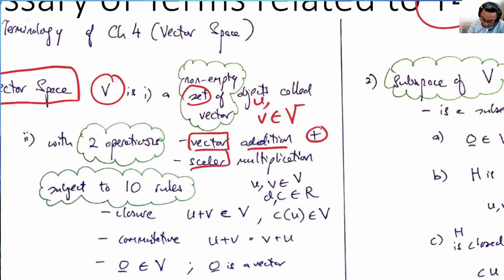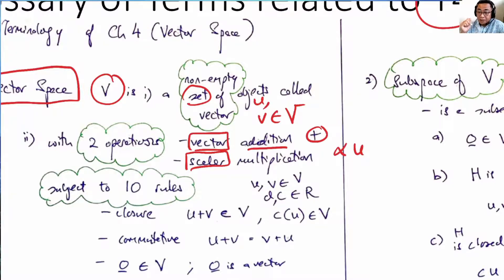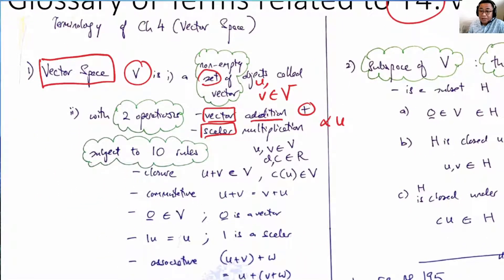Scalar multiplication means that we can scalar multiply the elements. The word scalar in our course is typically only for the real and complex field, or real or complex numbers. Once we have this vector space and these elements with these two operations, their operations are subjected to 10 rules.